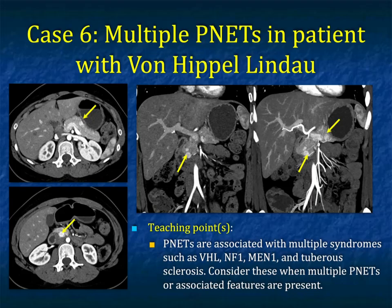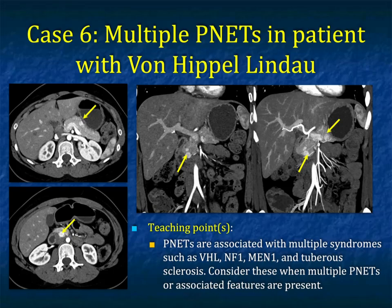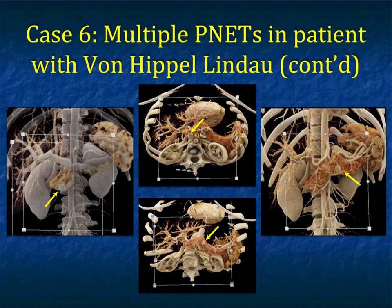Another case: this patient had Von Hippel-Lindau. As mentioned, patients with syndromes can have small but multiple lesions. There's great satisfaction in picking up a lesion, but often when you find one, people miss the second, third, or fourth. Here you can see two lesions in the head and one in the body. Neuroendocrine tumors are associated with Von Hippel-Lindau, neurofibromatosis type 1, MEN type 1, and tuberous sclerosis. You should consider these possibilities when you pick up multiple neuroendocrine tumors — sometimes the patient is not known to have one of these syndromes. Cinematic rendering very nicely shows many of the lesions across a spectrum of images.